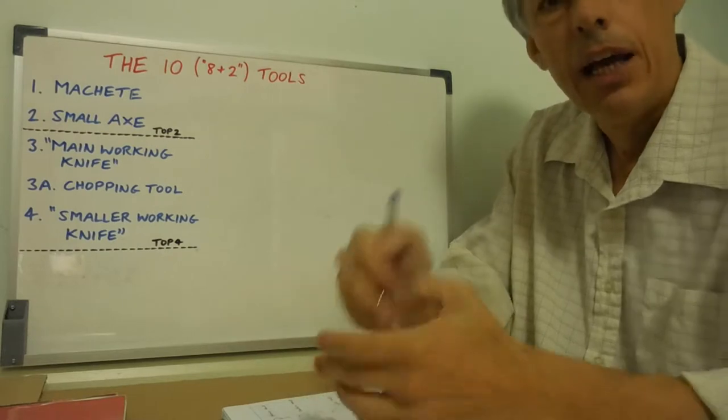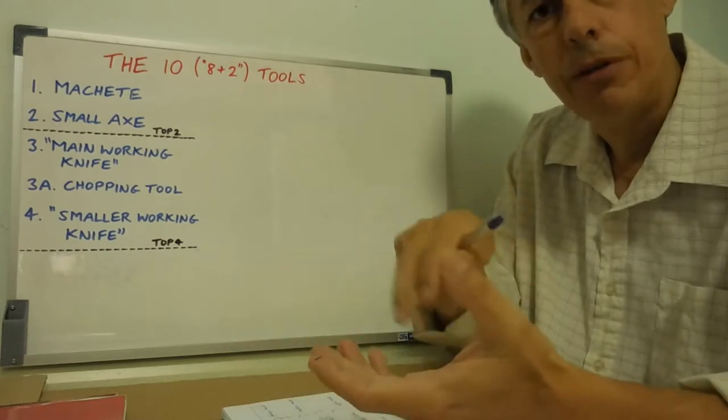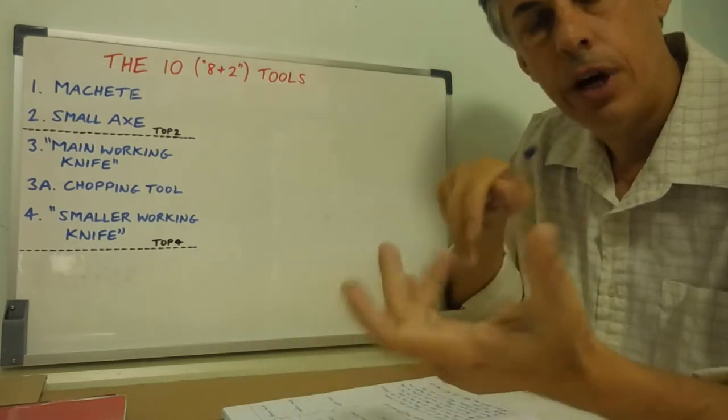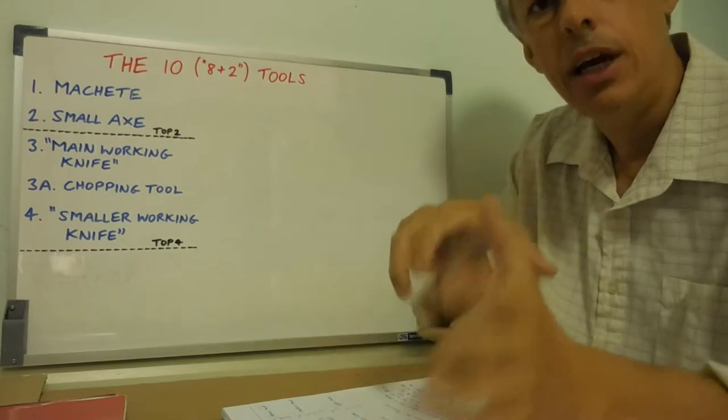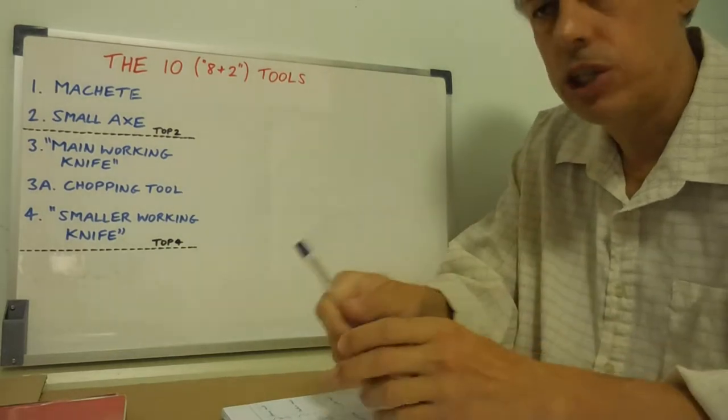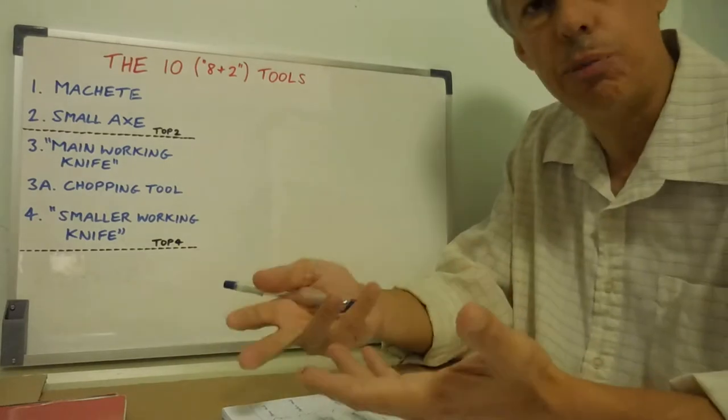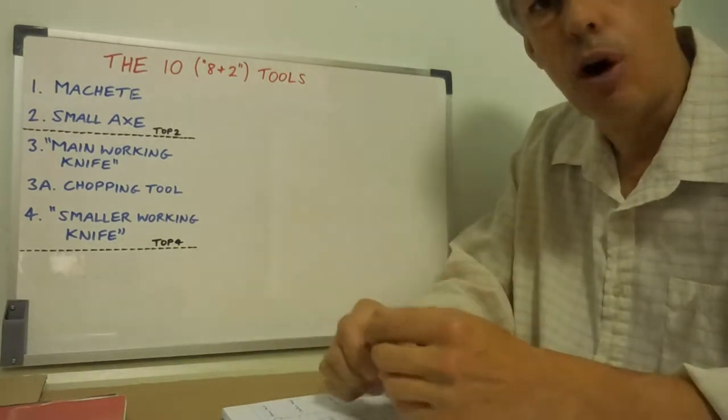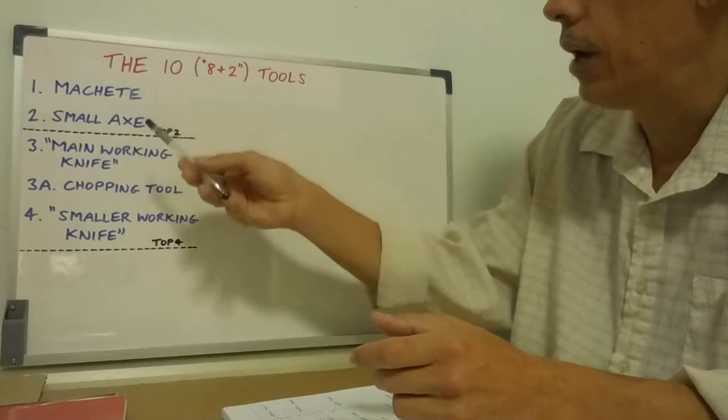A machete is going to be more dependable, because if it's a heavy duty, tough, dependable machete, it won't break. I've still got question marks about a small axe handles breaking, and the axe head's coming off. That's why it pips the small axe into number 1.